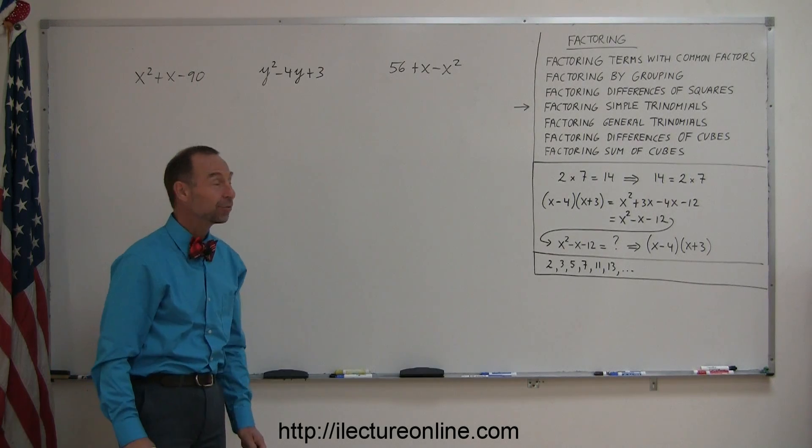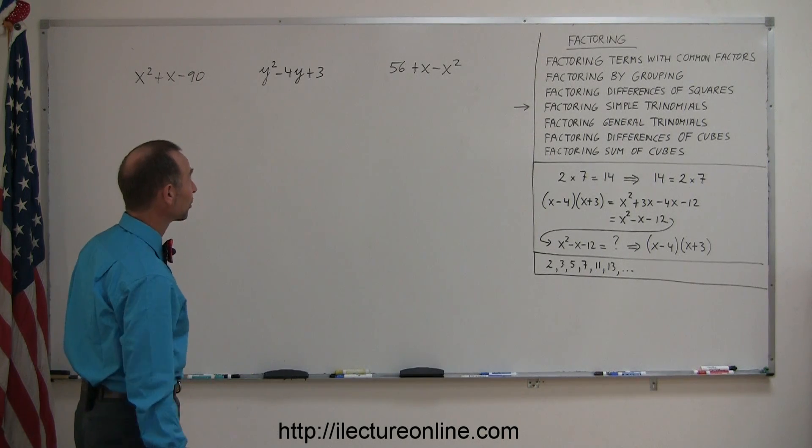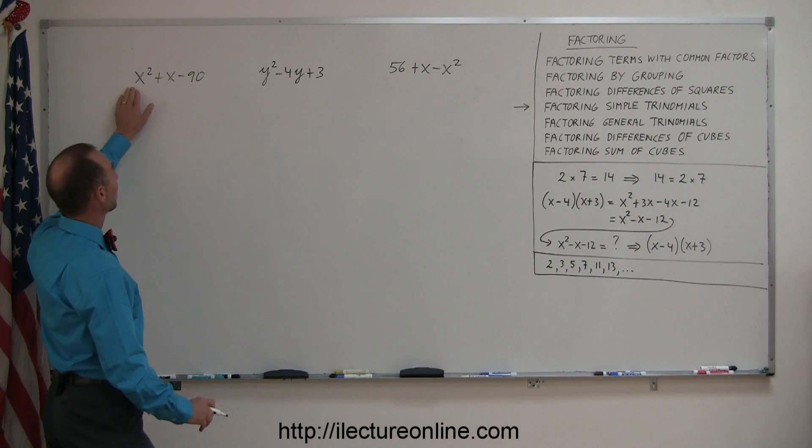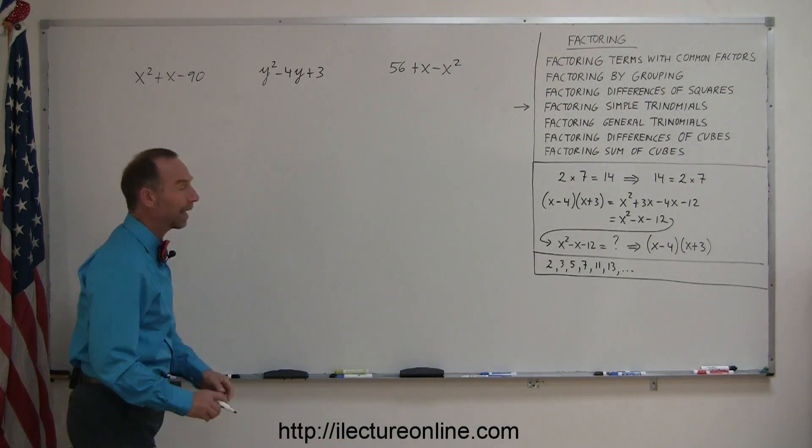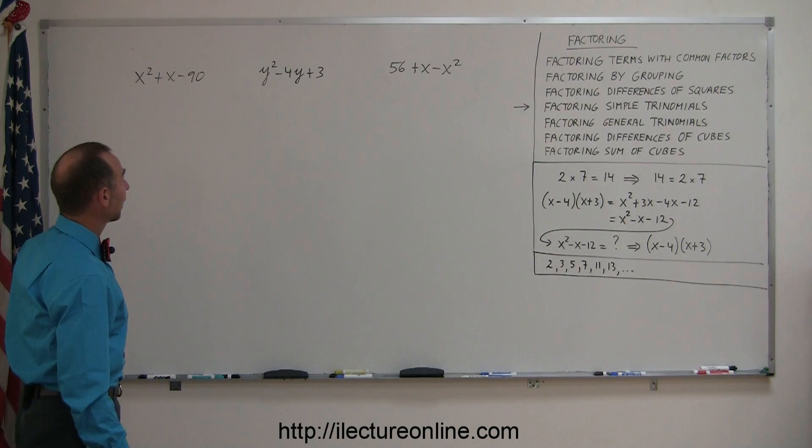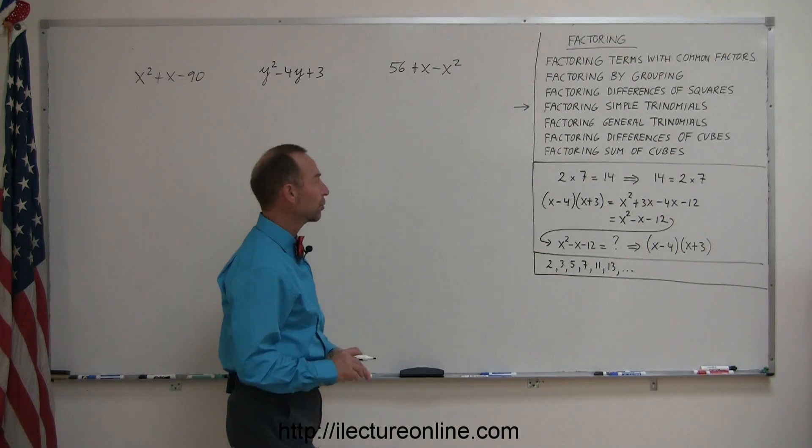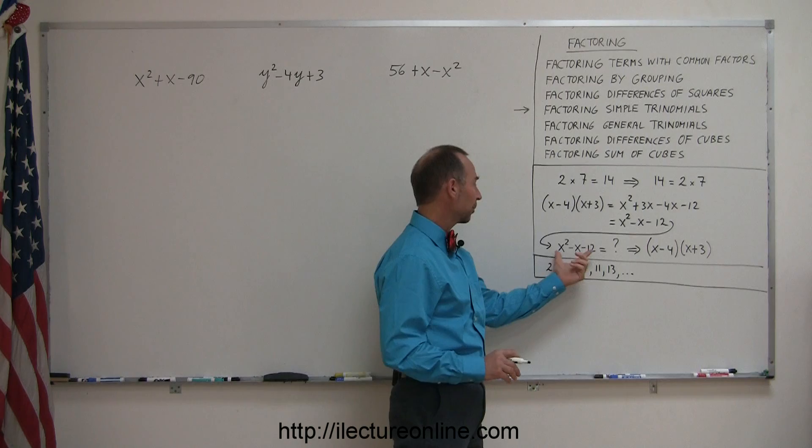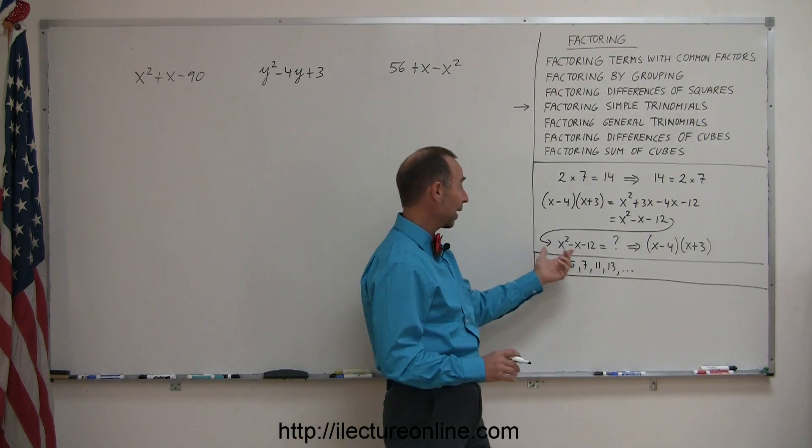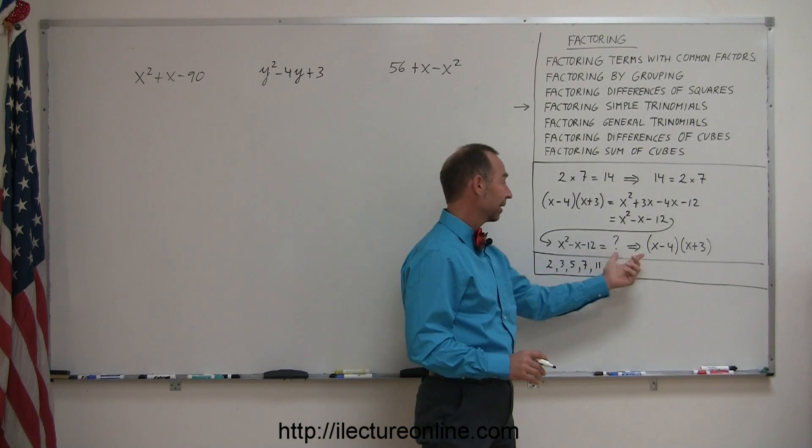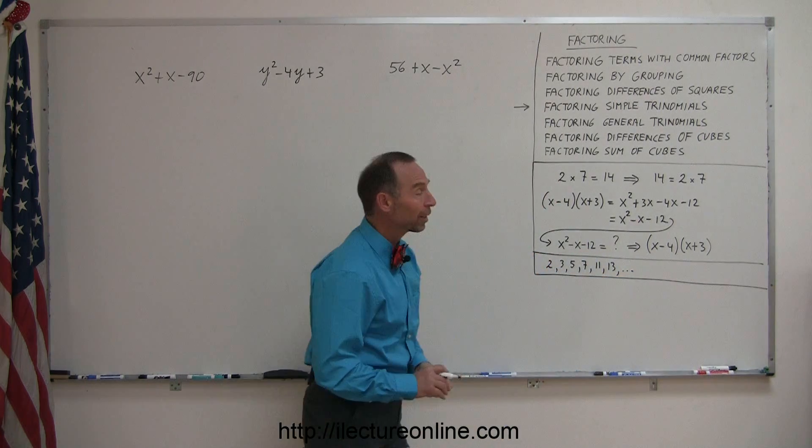Here's some more examples on how to do factoring for simple trinomials. Simple trinomials are the type where the squared term, x squared and y squared terms, have a 1 in front of them. If you're going to do factoring, you want to end up with something like this starting with something like this. In other words, you're going to write a trinomial like this in terms of the product of two binomials.